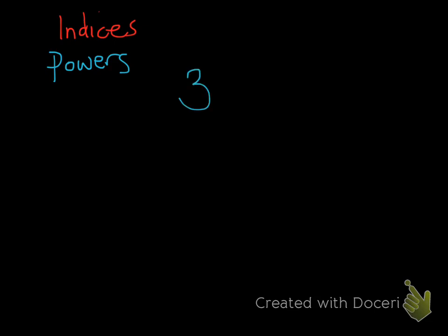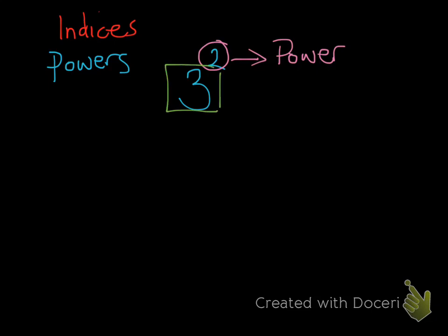So if I start with a number 3 and I put a little two over the top, this two is what we call the power of the number. What that two does is it tells us how many times this base number is multiplied by itself. So in this case you've got 3 to the power of 2, which just means 3 times 3, because it's the base number multiplied by itself twice.